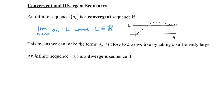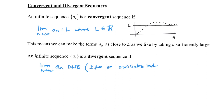On the other hand, an infinite sequence {a_sub_n} is a divergent sequence if the limit as n→∞ of a_sub_n does not exist. Usually this means the limit is ±∞, but it could also be that the sequence oscillates indefinitely and never approaches any single number. Either way, if the limit doesn't exist, the sequence is divergent.